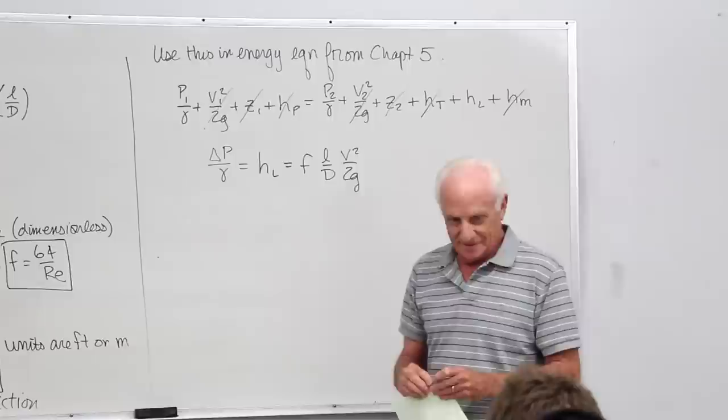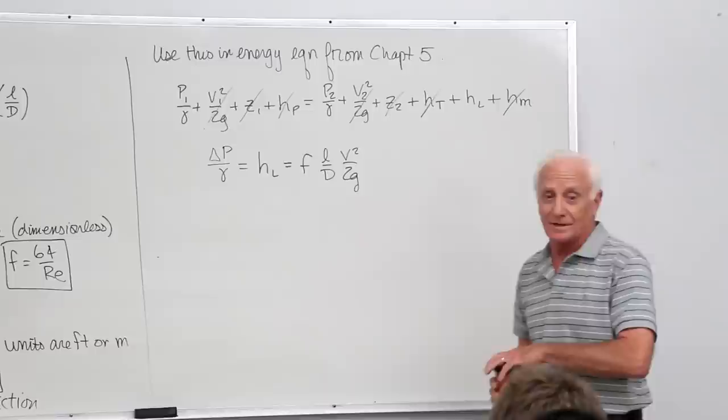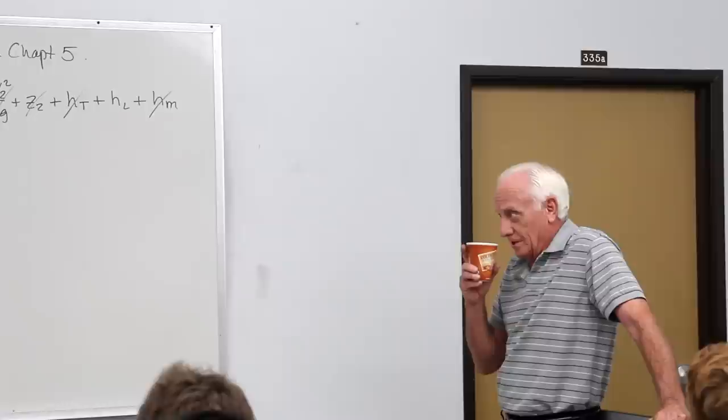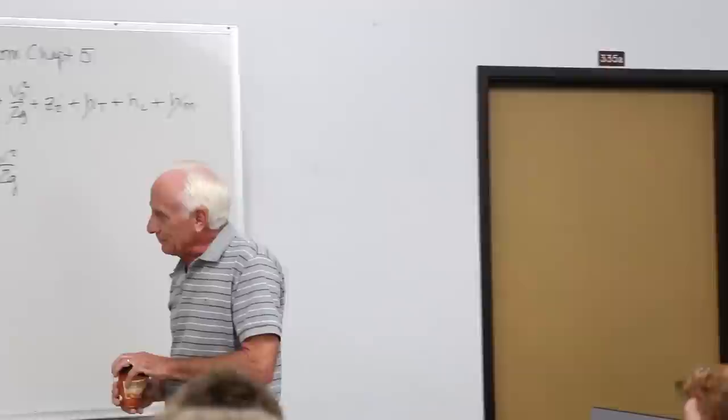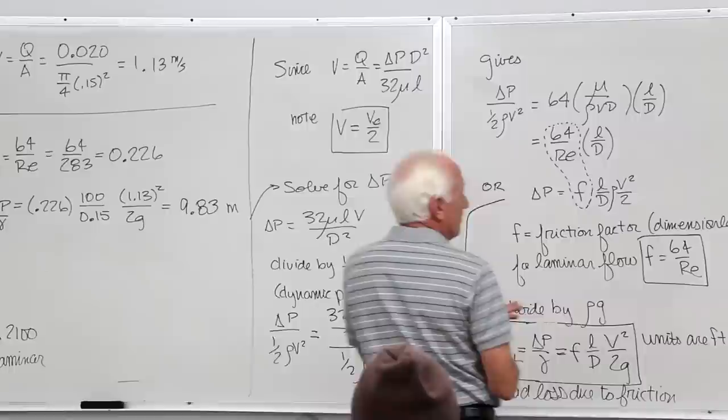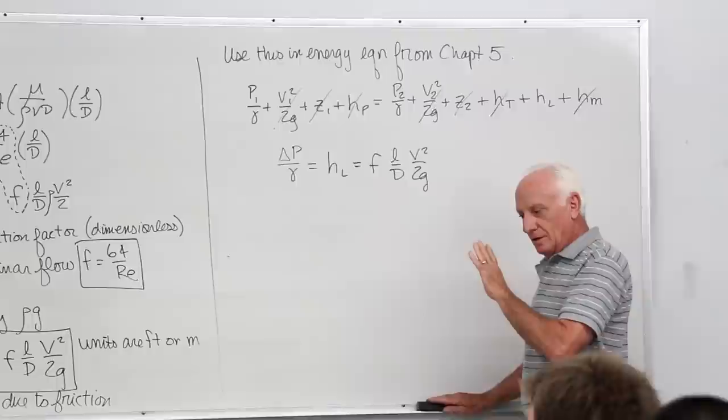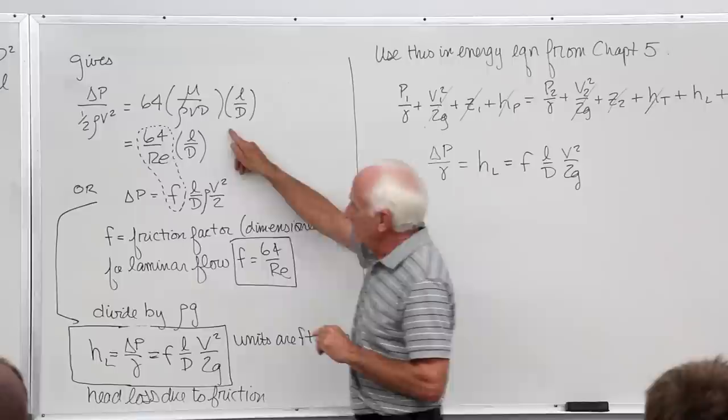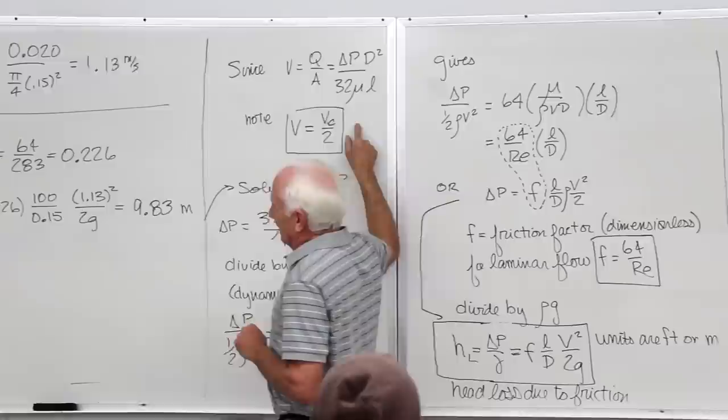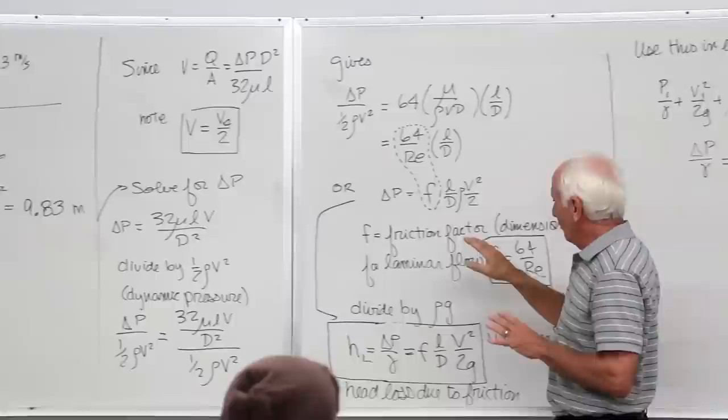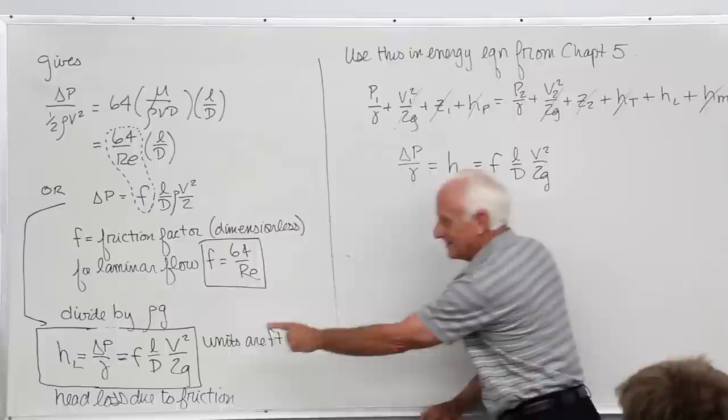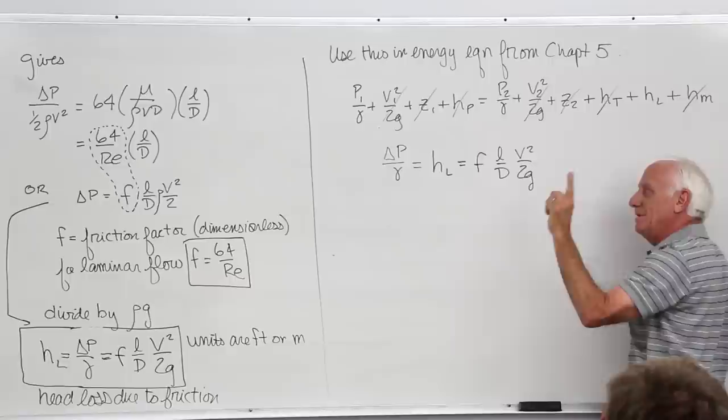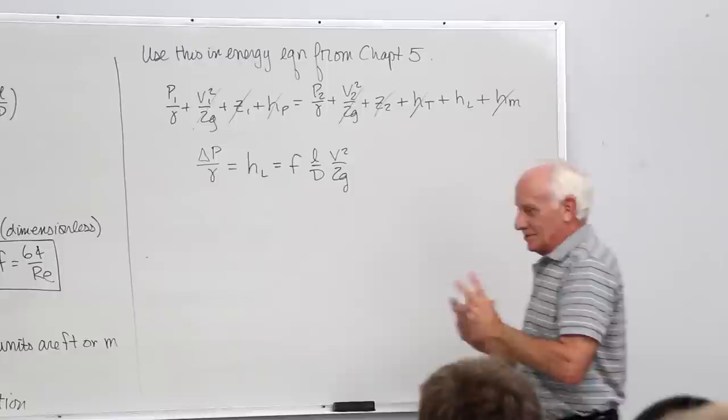Now we take a more difficult one, because most of the flows in the real world are not laminar, most are turbulent. So now you gotta figure out a way to get the turbulent pressure drop in the pipes. This equation is still going to hold whether the flow is laminar or turbulent. The only thing we can't do is this guy right here, because it came from Newton's law of viscosity. This is the one we cannot use for turbulent flow. But this equation is still true. Except now we need F for turbulent flow.